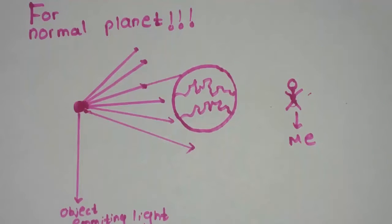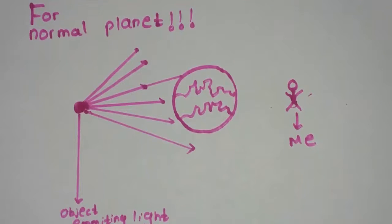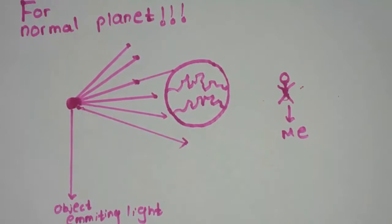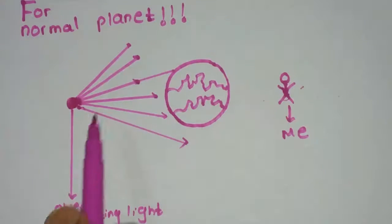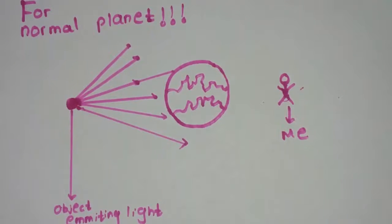This is for a normal planet. Let this be Earth, and this is any object which is emitting light or photon particles, and here I am standing on the other side of the planet, exactly opposite. According to wave theory, it emits light in all four directions, so it's impossible for the light of all these rays to reach here. So I can't see this object. But now let's see what happens with a black hole.